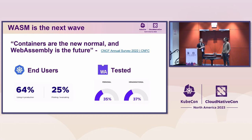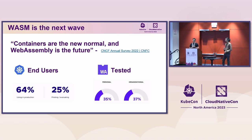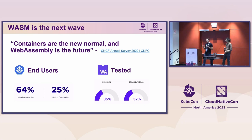When you look at the numbers, 64% of respondents are using Kubernetes in production environments, and 25% are doing POCs that will probably end up in production. But when you go to WebAssembly, only 35% have actually tested it. So we need to tackle how you actually move from testing to production and bring WebAssembly side-by-side with Kubernetes.